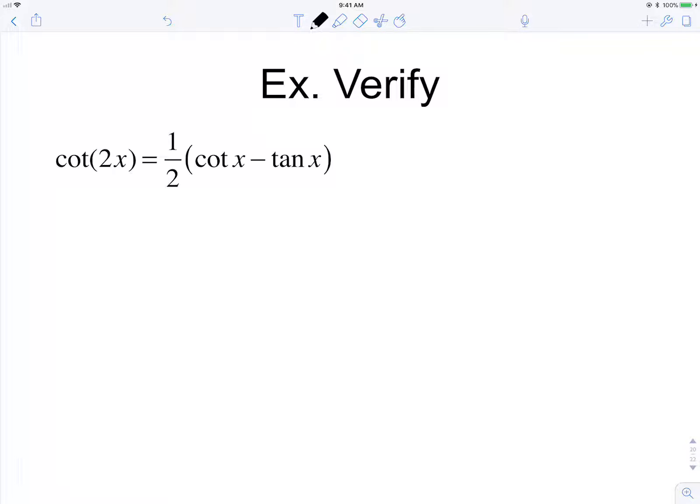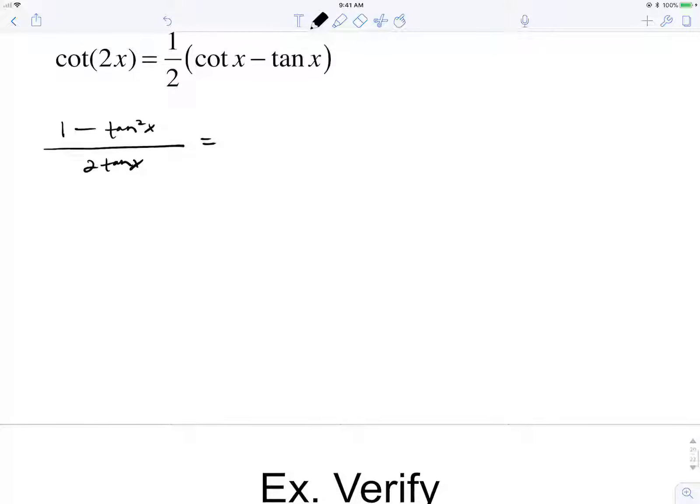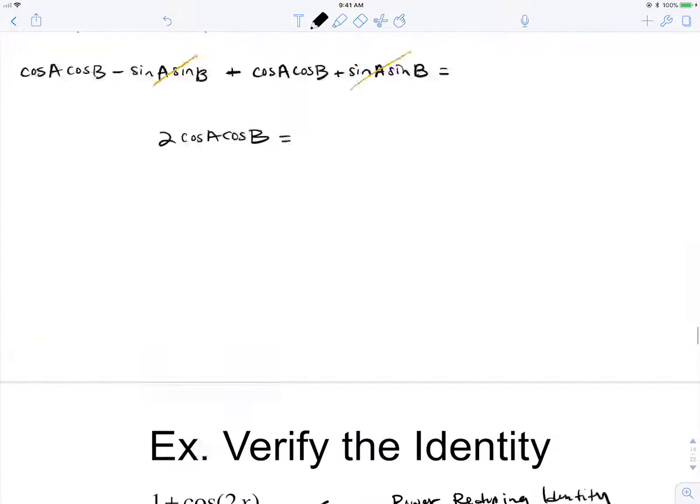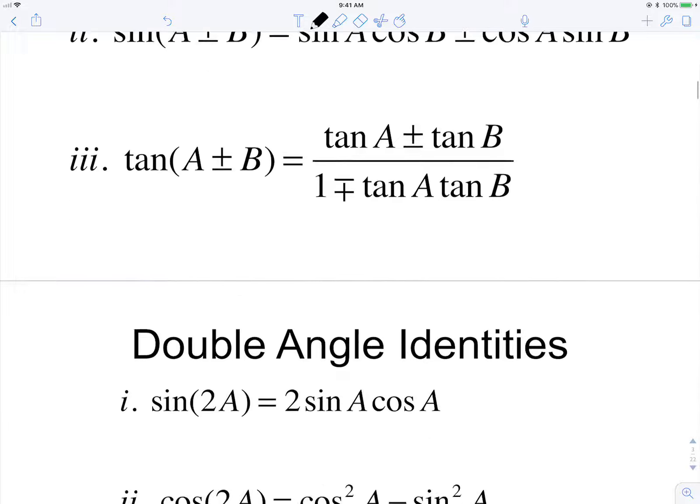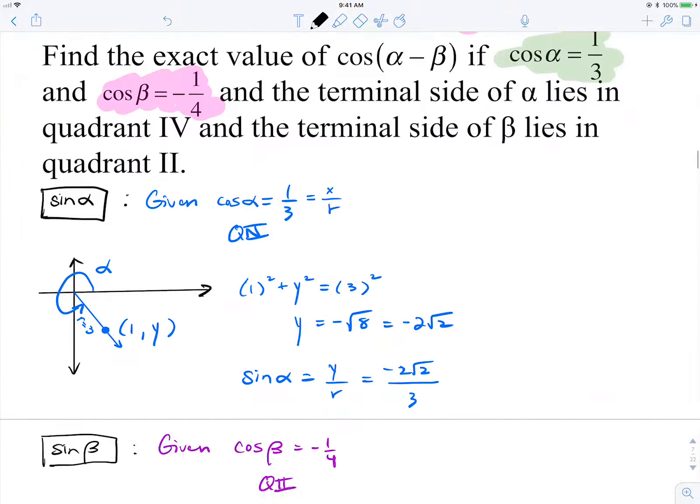Left hand side, cotangent is the reciprocal of tangent. So I can use the reciprocal of the double angle identity for tangent. So 1 minus tan squared over 2 tan x. And 1 minus tan squared is equal to... that is the double angle identity, right? Just making sure.